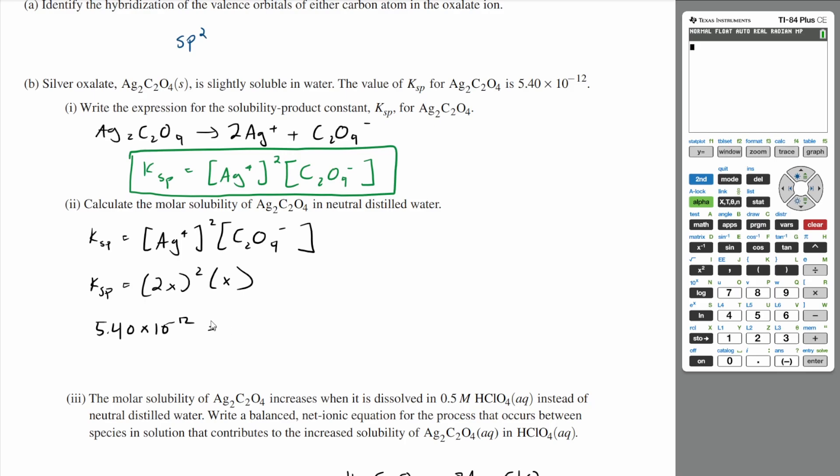And then this would be 4X cubed. And so your X would be the molar solubility of silver oxalate, which is how much silver oxalate is going to dissolve in the neutral distilled water. So if you solve for X,